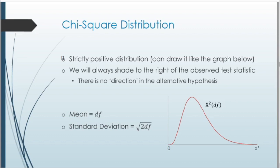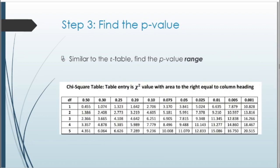The mean of the chi-squared distribution is simply the degrees of freedom, and the standard deviation is the square root of two times the degrees of freedom. To find the p-value, similar to working with the t-table, our chi-squared table gives us a range rather than an exact p-value. Given our degrees of freedom, we find which two tabled values surround our test statistic and use that to find the p-value range.